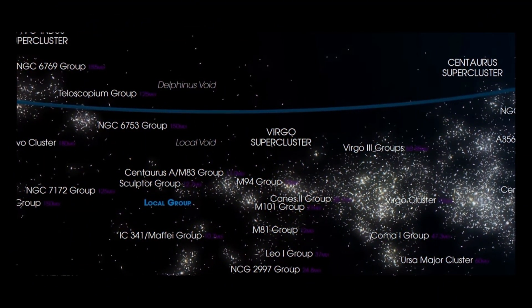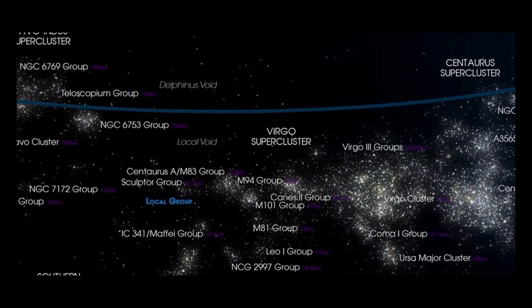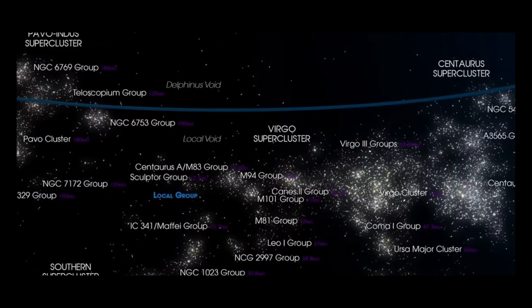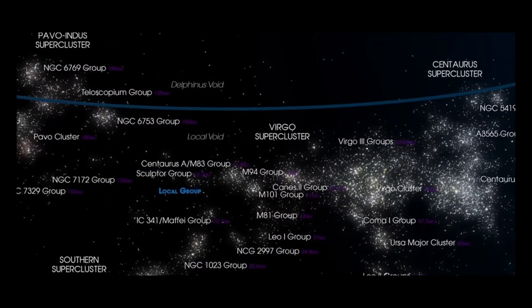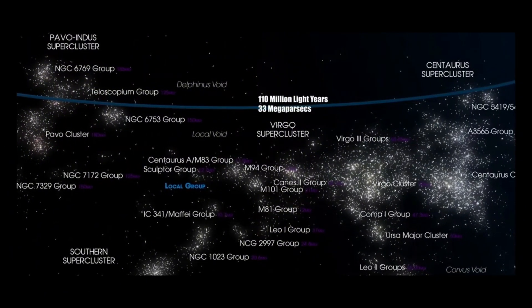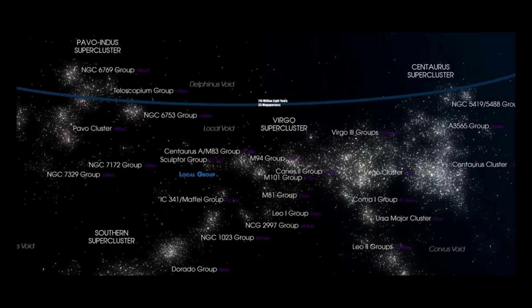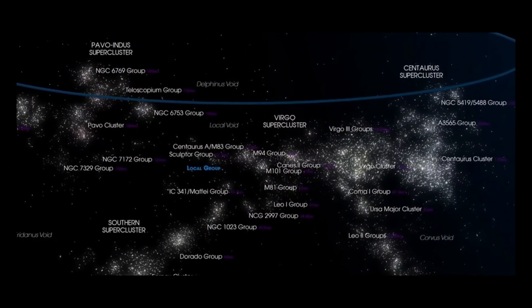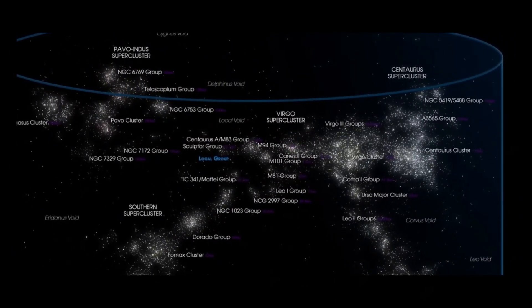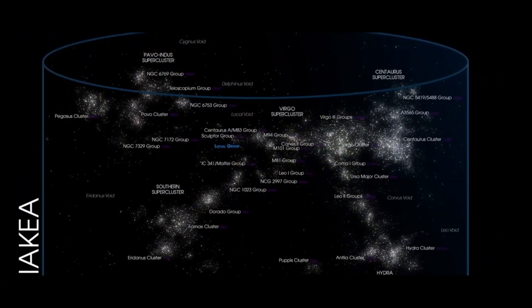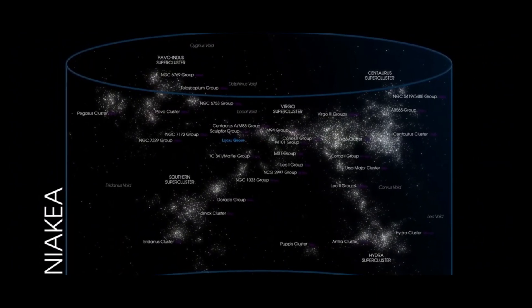We encounter the Virgo Supercluster, an immense collection of galaxy groups and clusters, including our own Local Group. A region of space about 110 million light years in diameter, over 33 megaparsecs. The Virgo Supercluster is a titanic structure in the universe, containing thousands of galaxies from at least 100 groups of galaxies and clusters, each with their own stars and planets.